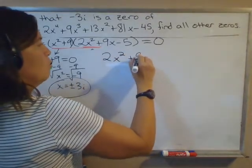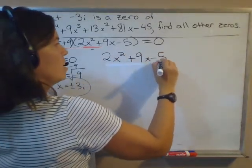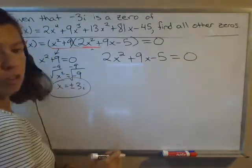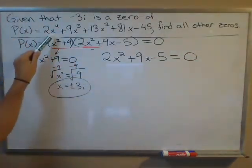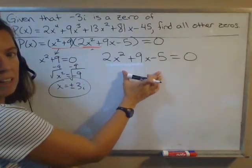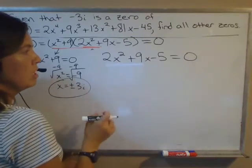Now what we're mostly concerned with is setting this quadratic expression equal to 0 and finding the two remaining zeros for this degree 4 polynomial. We have two of them. We're looking for two more that are going to come out of this quadratic expression here.